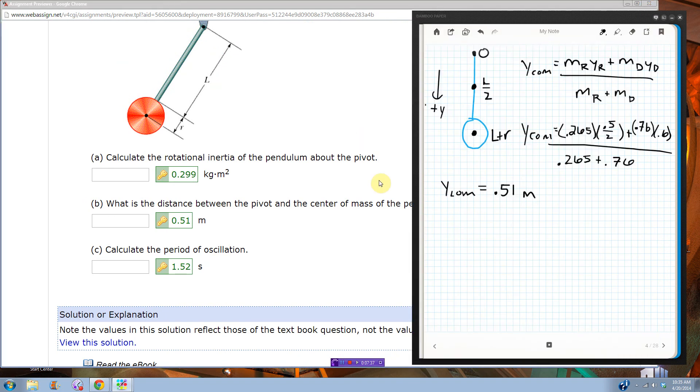Now calculate the period of oscillation. Okie dokie. Well, for a physical pendulum, a physical pendulum, the period is 2 pi times the square root of the moment of inertia about the pivot, divided by mgh, where h is the distance from the center of mass to the pivot. Now we just calculated i and h, basically in parts a and b, so all I have to do is plug them in.